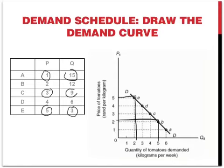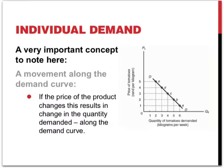As the price decreases, the quantity demanded increases. A very important concept to note here is the idea of a movement along the demand curve. If there is a change in the price of the product, this results in a change in the quantity demanded, and this can be described as a movement along the curve. Let's say the initial price is at 4 rands a kilo and 3 kilos of tomatoes are demanded in a week. Then the price decreases to 2 rands — the result is that the quantity demanded increases to 5 kilos a week. This is a move along the demand curve from point D to point B. Such a movement along the curve can only be caused by a change in the price of the product.